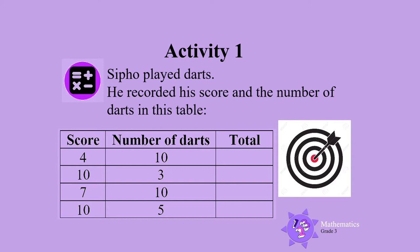Activity 1. Sipo played darts. He recorded his score and the number of darts in this table. Work out the totals and fill them in on the table.